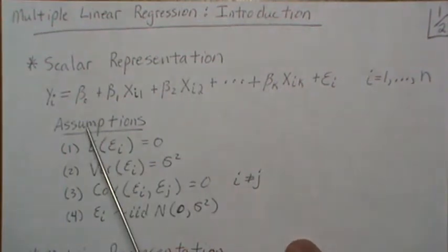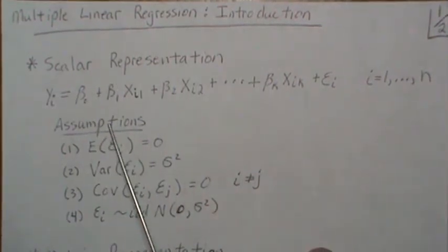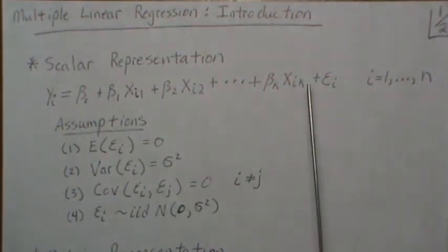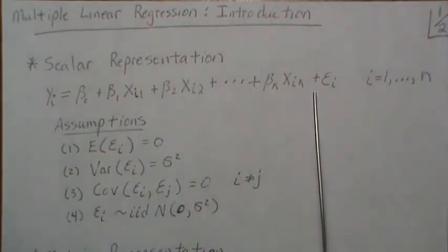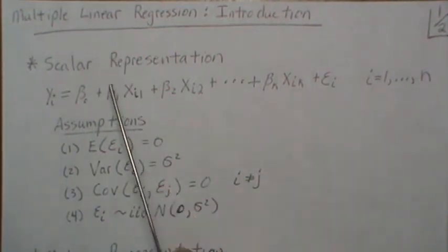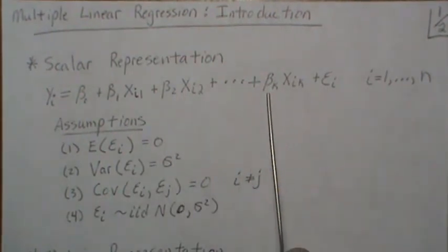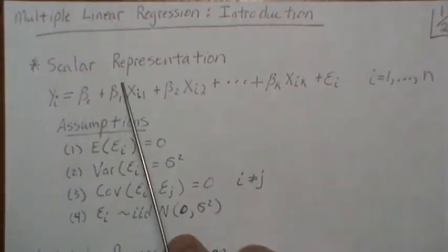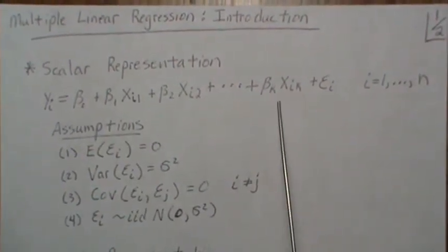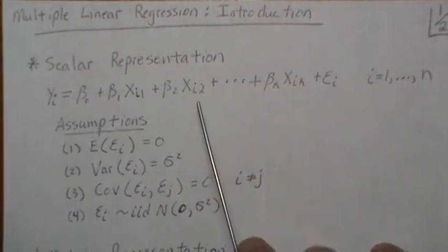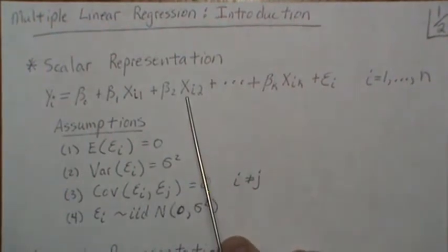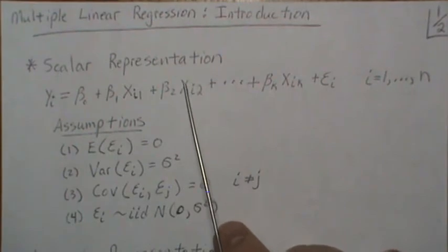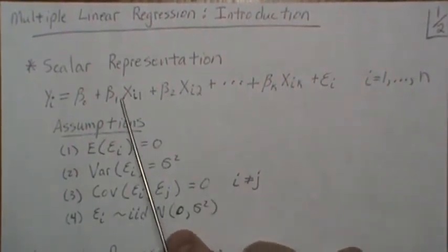So here to represent the multiple linear regression model in scalar representation, y follows this model plus some error. Now the key term is linear and that means linear in the beta parameters. None of these beta parameters are squared or square rooted or cubed. They have to be raised to the first power and they have to be added in this type of fashion. Now the x's can be anything. They're considered fixed. You could have the log of x, e to the x, x squared. These don't matter. It's the betas that have to be linear.